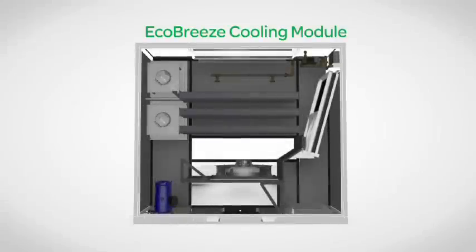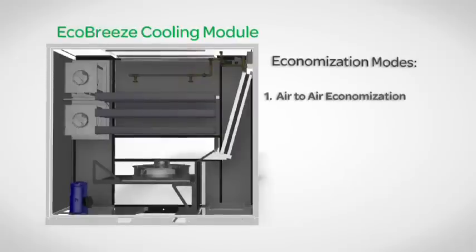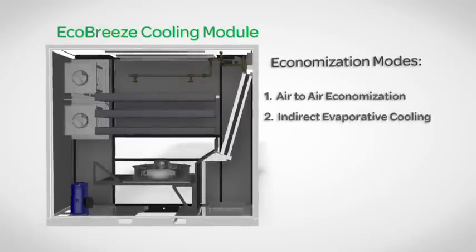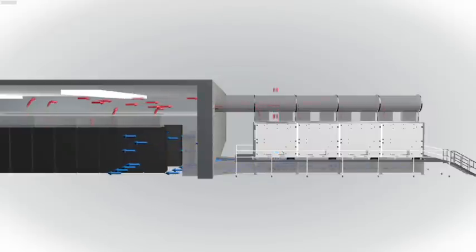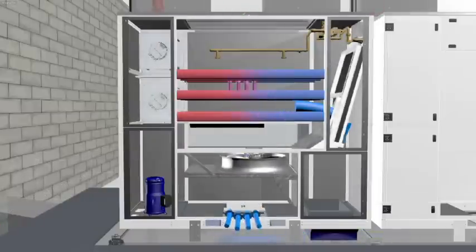Unlike other free cooling systems, EcoBreeze offers two separate methods of economization, not just one. The first is air-to-air economization. Air-to-air economization works by taking two airstreams, the outdoor air that's cooler, and the indoor air that's heated from the IT equipment, and doing a heat exchange between the two without ever mixing them. And the heat exchanger is designed using specific materials designed to transfer that heat from one airstream to another.